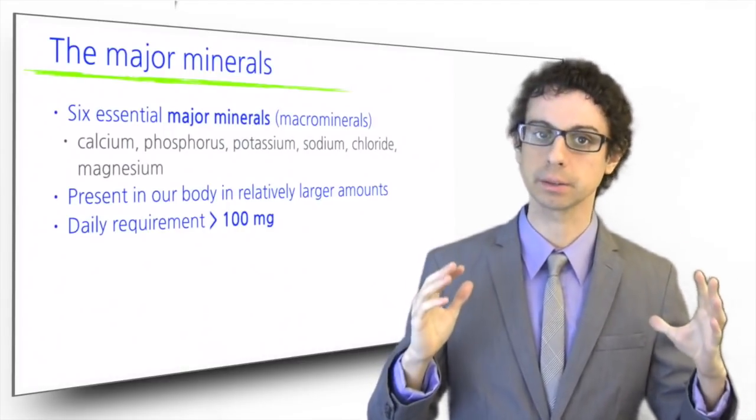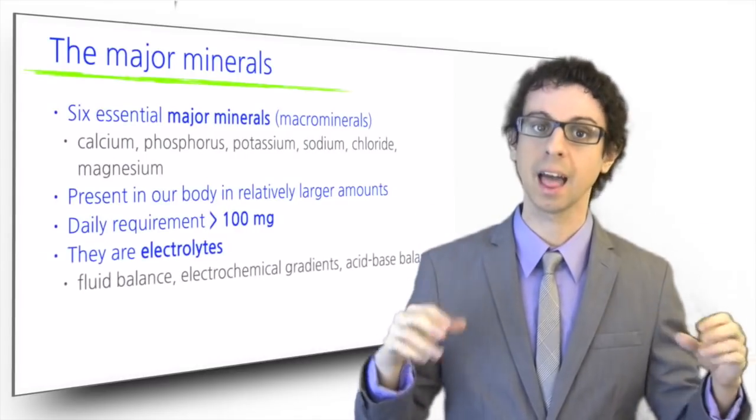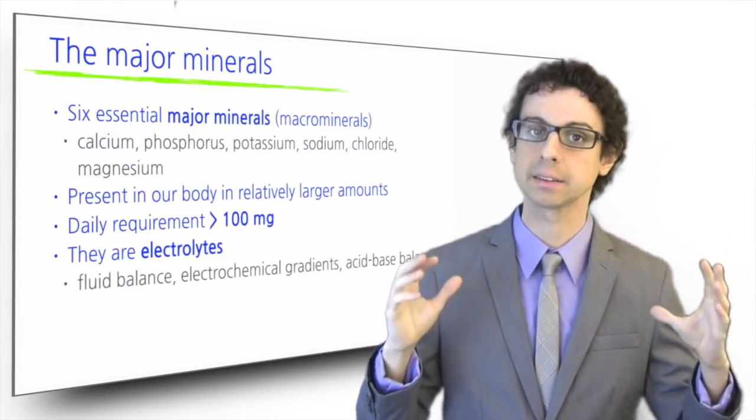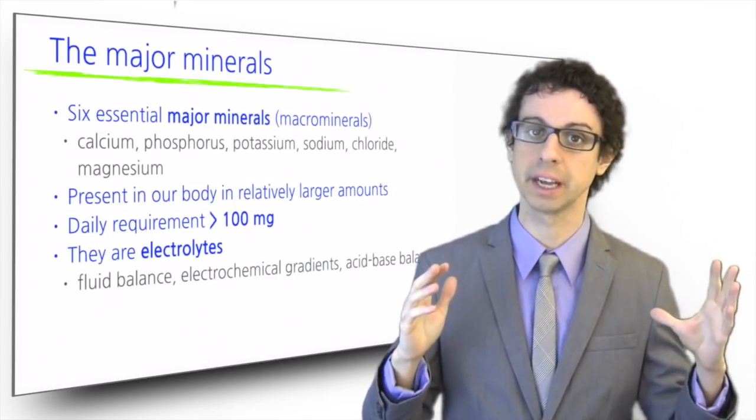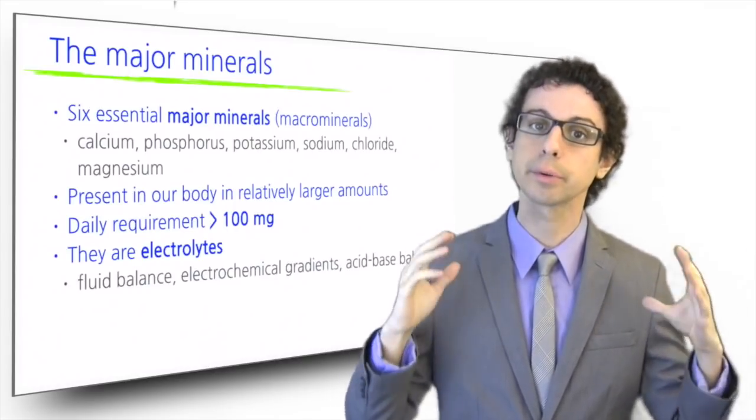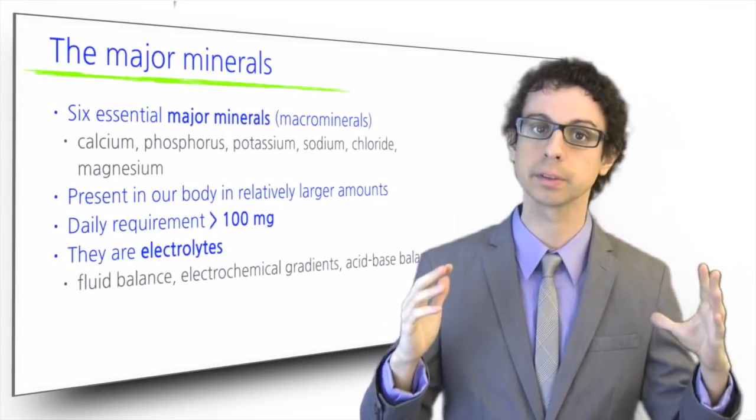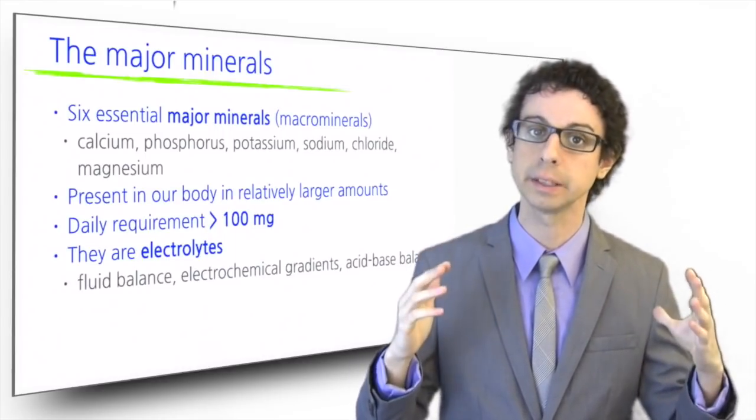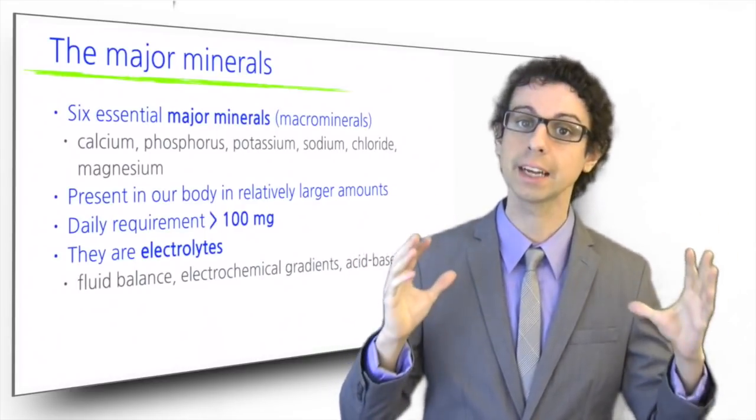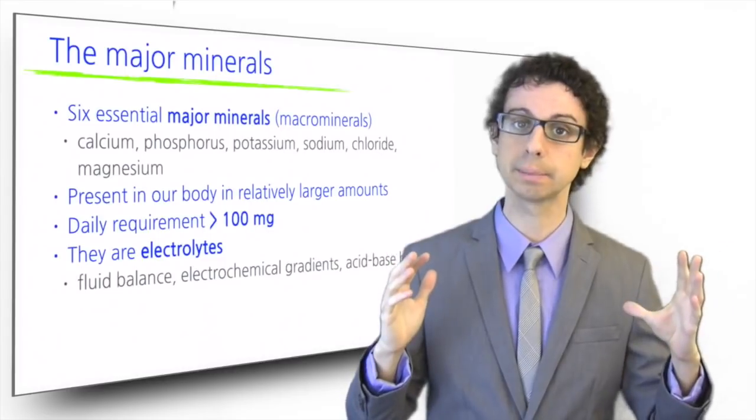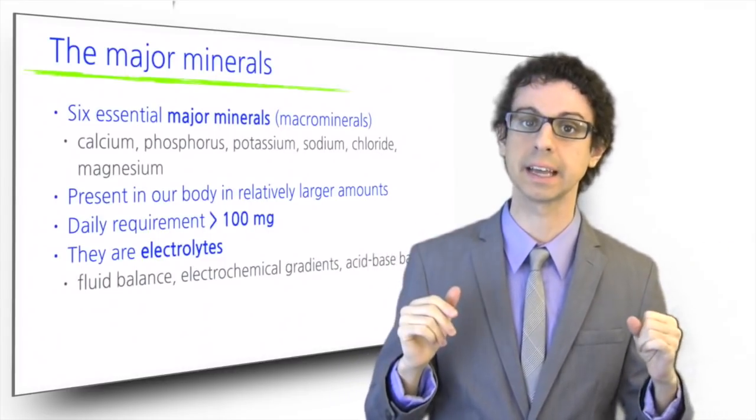The major minerals are all electrolytes. They regulate fluid balance and electrochemical gradients, and buffer blood pH. This allows for proper conduction of nerve impulses and muscle contraction, including heartbeat and breathing. If the electrolytes are in the right proportion, acid-base balance can be more easily maintained.